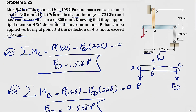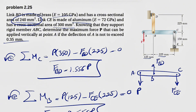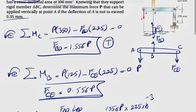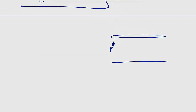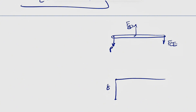Now we move on to the deformation diagram. One thing to keep in mind is that we need to figure out if each member is in compression or tension. Member BD is in tension, and member CE is in tension too. For the diagram, if we consider a zero line for the member, we have force P, FBD, and FCE. The movement of each point comes from the deformation in the attached member.